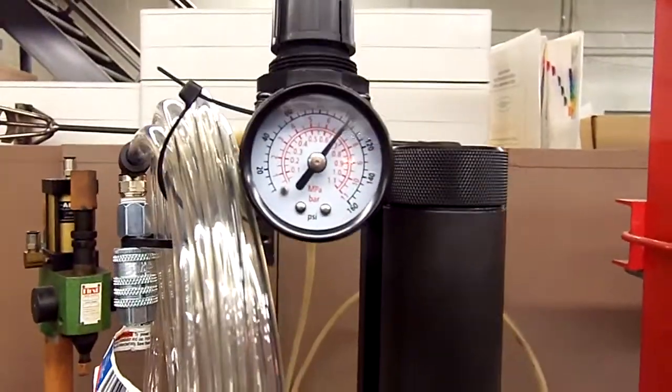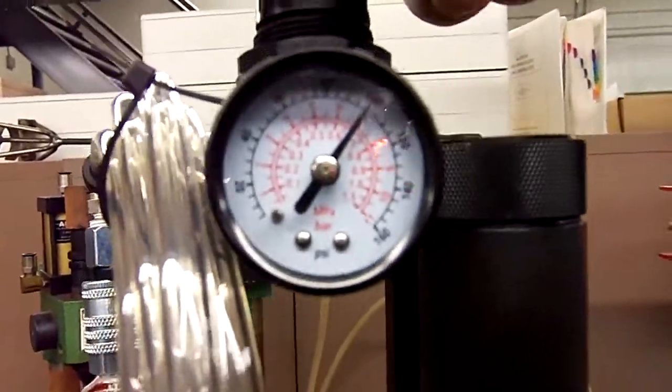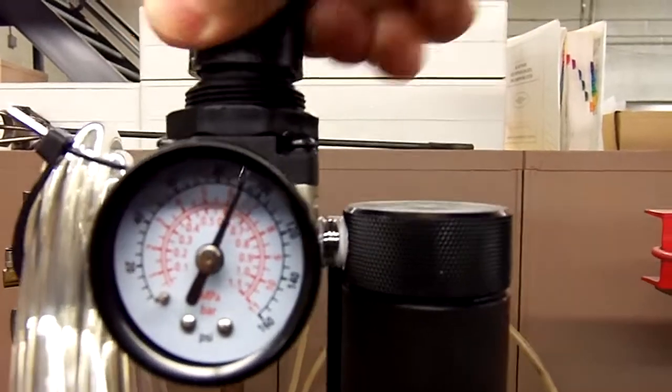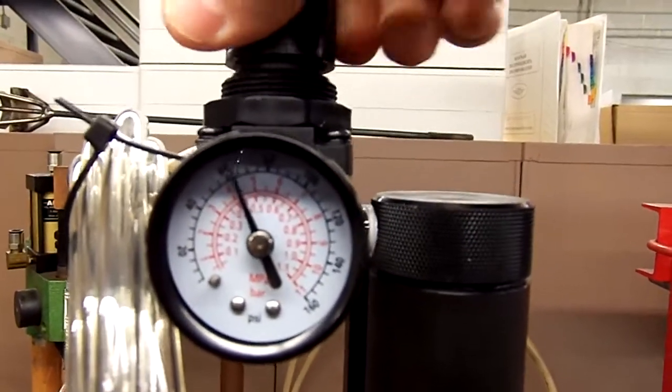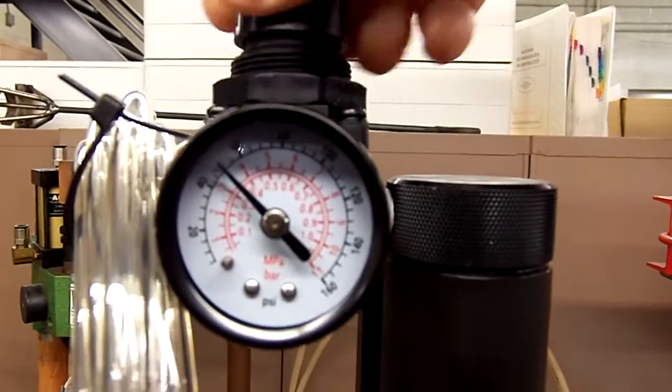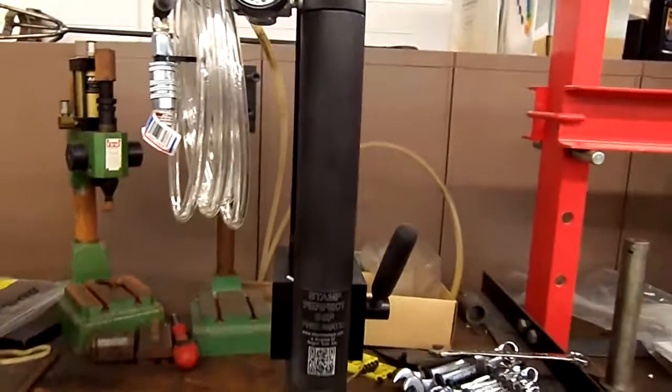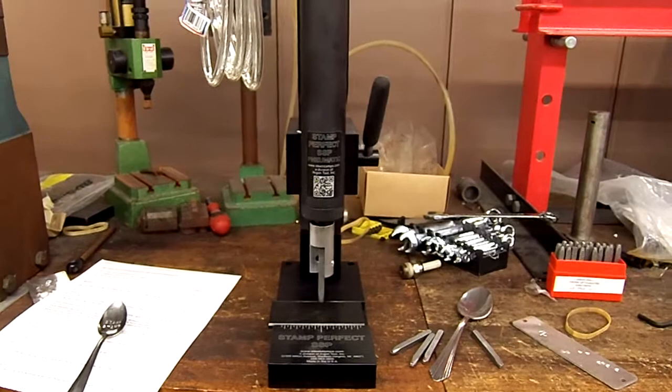Right here you can see that I have 90 pounds of pressure on it. And if you wanted to dial that down, you simply turn this and you can see the air pressure will go down. And you can set it to a point at which you get the depth of the mark you want. So that's our SSP pneumatic and that's what it can do for a spoon.